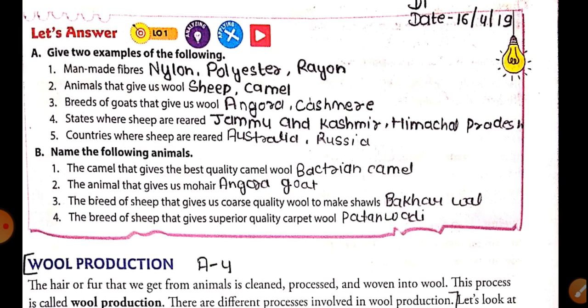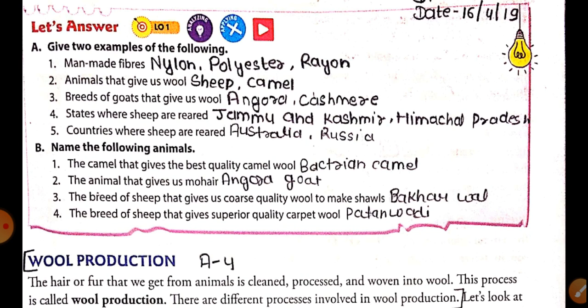Now we will complete the exercise. Man-made fibers: nylon, polyester, and rayon. Animals that give us wool: sheep and camel. Breeds of goat that give us wool: angora and cashmere. States where sheep are reared: Jammu and Kashmir, Himachal Pradesh. Countries where sheep are reared: Australia and Russia. The camel that gives the best quality wool: Bactrian camel. Animal that gives us mohair: angora goat. The breed of sheep that gives coarse quality wool for shawls: Bakharwal. The breed giving superior quality carpet wool: Patanwadi. You can pause the video and write this in your copy.